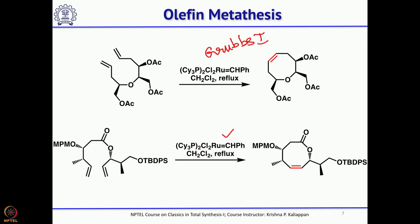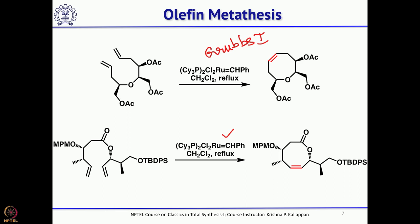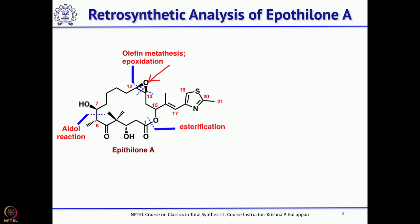There are many other catalysts — Grubbs, Grubbs-Hoveyda, and so on. Coming to the total synthesis of Epothilone: the epoxide was formed from an olefin, and that olefin was formed through ring-closing metathesis — that was the first key retrosynthetic disconnection by Nicolaou. Cleaving the ester gives alcohol on one side and carboxylic acid on the other. The next cleavage gives an ethyl ketone on the southern hemisphere and an aldehyde on the northern hemisphere. An intermolecular aldol reaction can generate these two stereocenters.